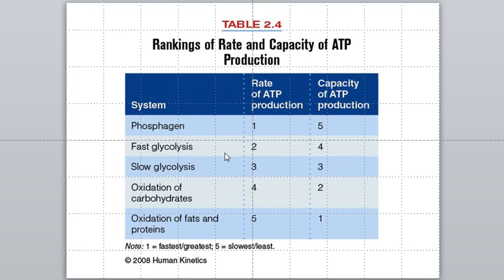This chart shows the rate versus yield of the four systems: phosphagen, fast glycolysis, slow glycolysis, and oxidation of carbohydrates. The rate — how fast they produce ATP — is ranked from fastest to slowest, while capacity is ranked from lowest yielding to highest yielding. Fat oxidation is the highest yielding, and the phosphagen system is the fastest producing.